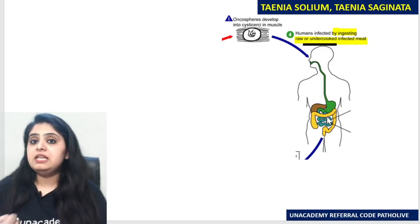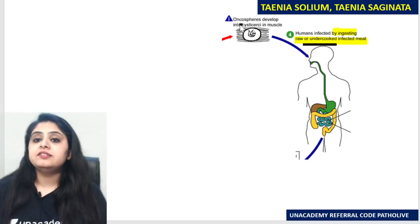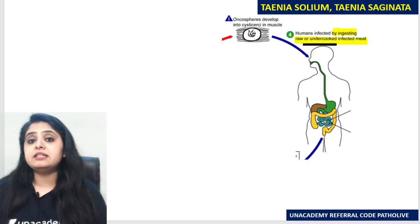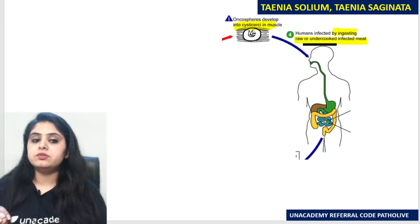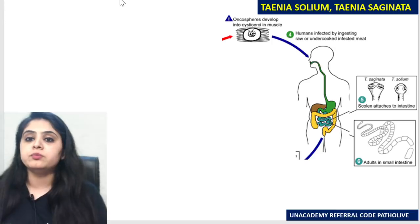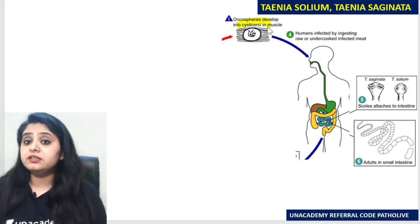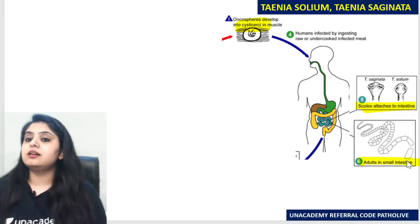Depending on the organism — solium or saginata — whatever meat we eat, that meat is infected. If we consume undercooked or raw meat, this is one way the organism enters the body, because the infected pork or beef we have eaten can have cysticerci in the muscle. So ingestion of undercooked meat has happened. After ingestion, the adult worms are going to form — what we consumed in this life cycle is the cysticercus. After going into the intestine, the scolex attaches to the intestine and adults form.